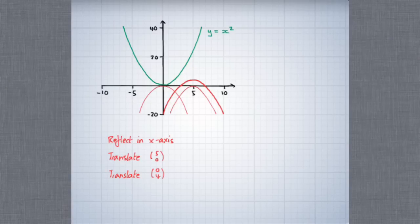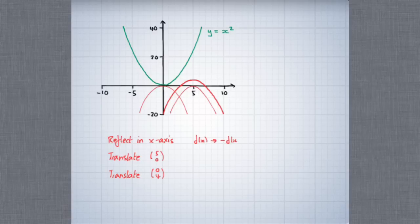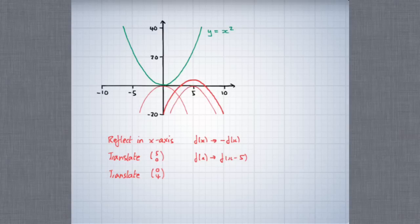Now we've identified some transformations, we need to think about what changes we need to make to the function we're graphing. We know that when we reflect something in the x-axis, we change the function f(x) into minus f(x). We know that when we translate something parallel to the x-axis with vector (5, 0), we translate f(x) into f(x minus 5). And finally, when we translate something parallel to the y-axis with vector (0, 4), we turn f(x) into f(x) plus four.